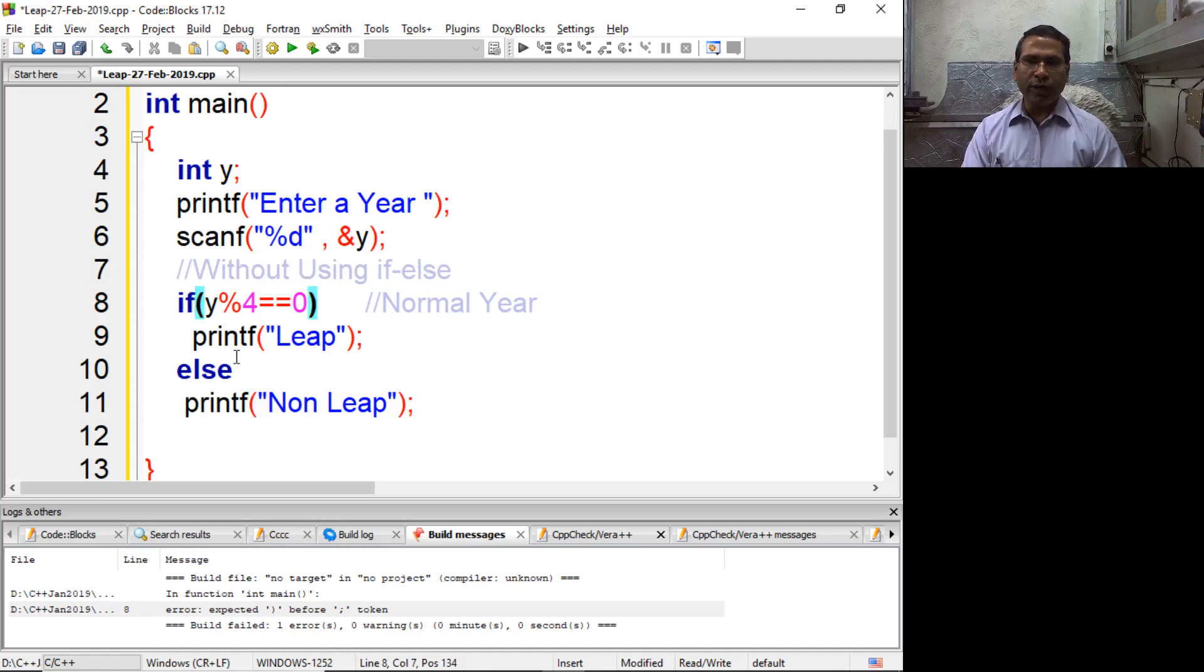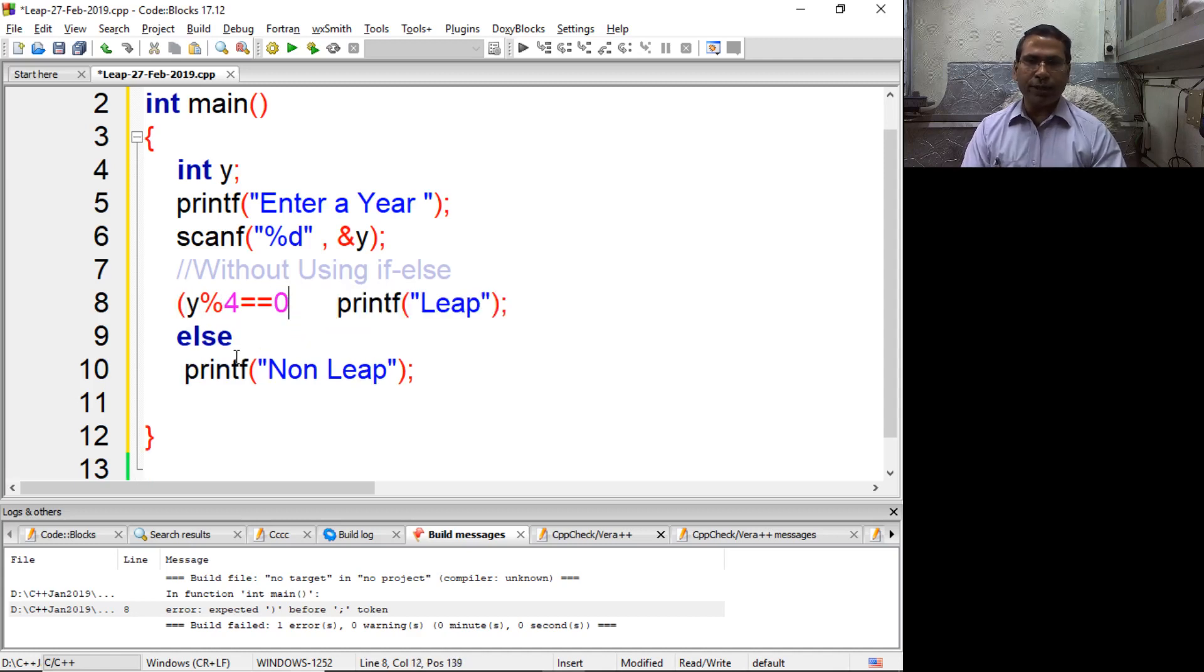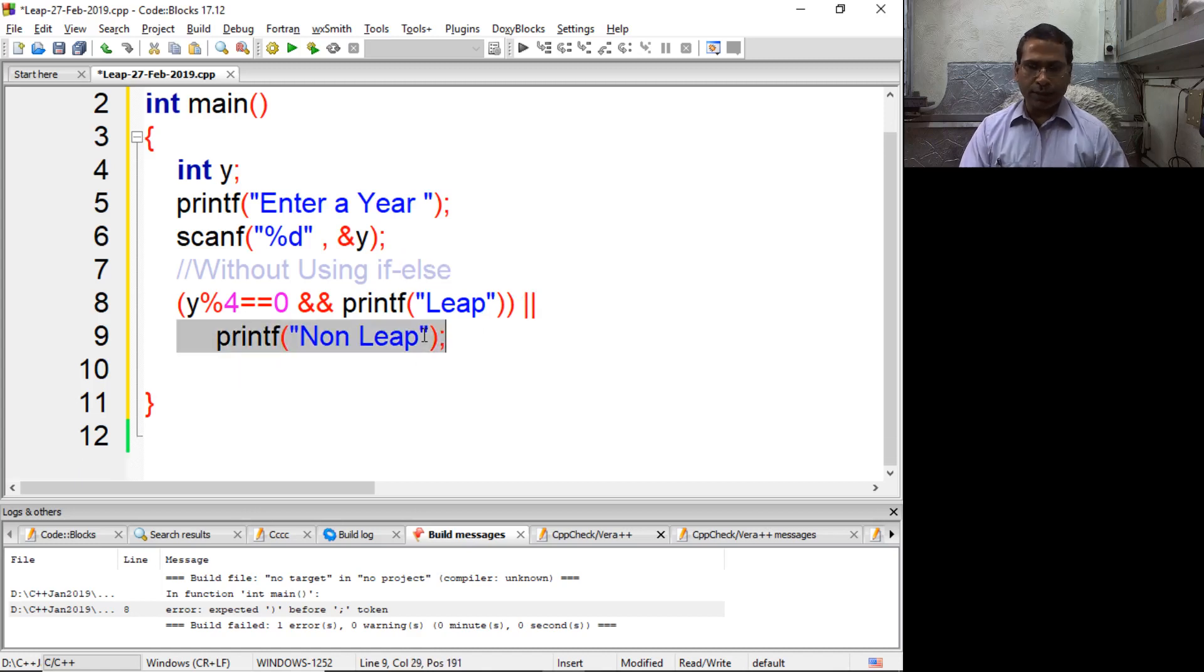So I am removing if from this logic, and here I am using AND operator. Now whenever the condition is true it executes this part, but if the condition is false we'd like to execute this part. Program is ready, compile it and execute it.